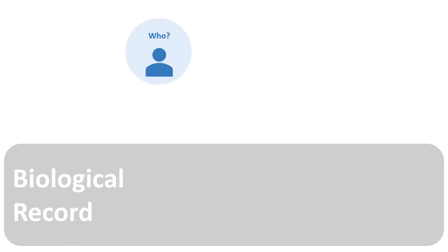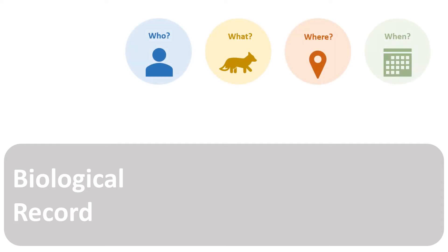Every biological record must have four basic components: who, what, where and when.